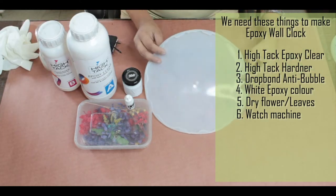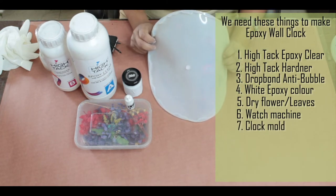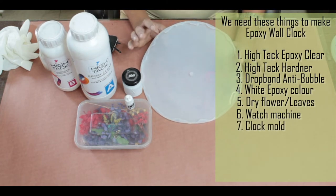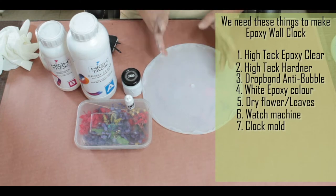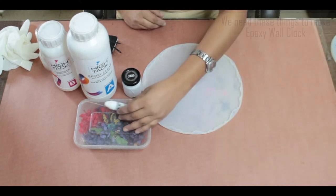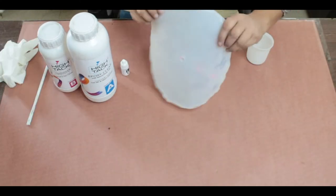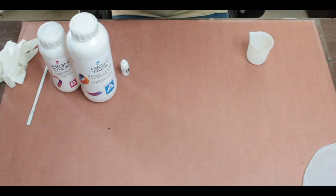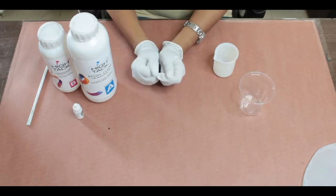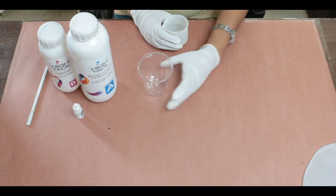I have made some mold, you can see the mold from the market, so we are going to make the mold. Now we are going to make the mold on the side. We are going to use surgical hand gloves. Now we will take a plastic glass.